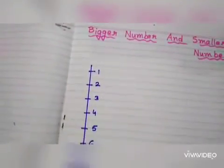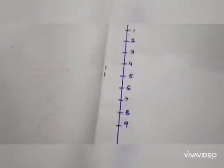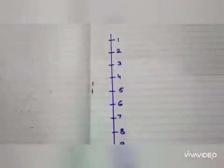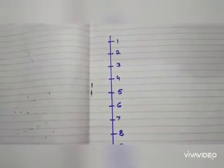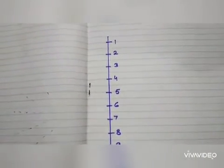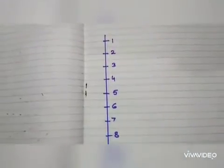This is the number line I have already drawn. Children, in class when I tell you to write 1, 2, 3, 4, how do you write? Like this only, no?